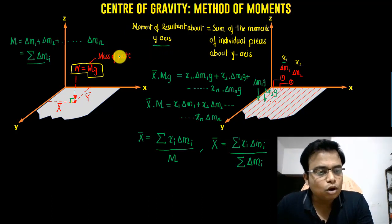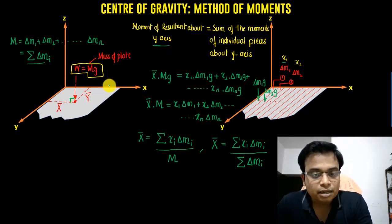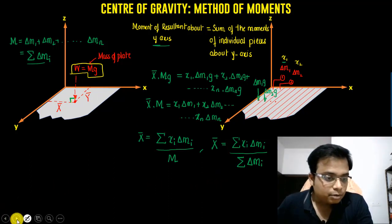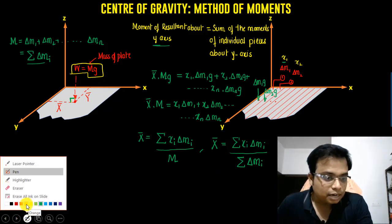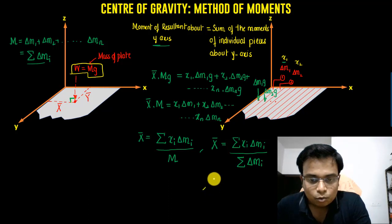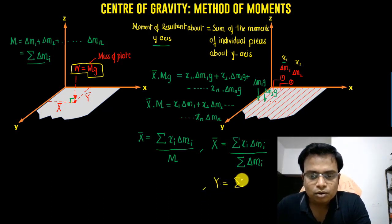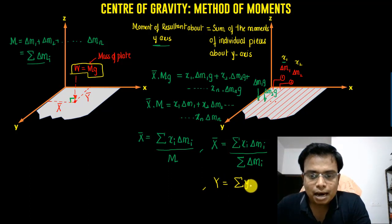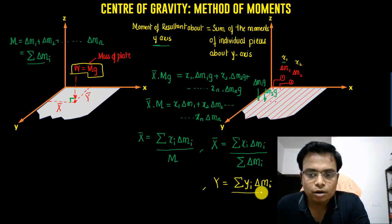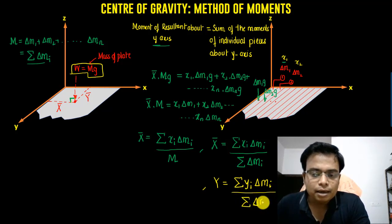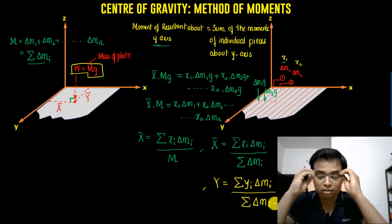If you take the moment of this force with respect to the x-axis instead, you get one more expression. That final expression is: Ȳ = summation of yi·δmi divided by summation of δmi.